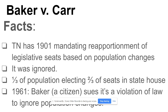In 1961, a citizen named Baker sued, arguing it was a violation of law to ignore the population changes. Tennessee had ignored its law mandating reapportionment for 60 years. Baker lost at the state level — the state basically told him no — so he appealed to the federal court, and eventually the case ended up in the Supreme Court. Baker argued it was totally unfair that Memphis had the same representation as a small rural area of Tennessee.